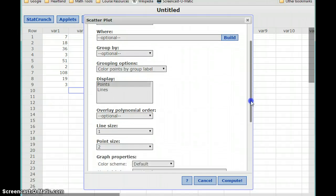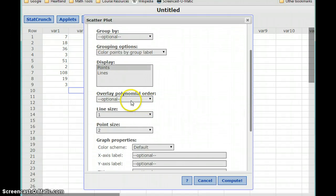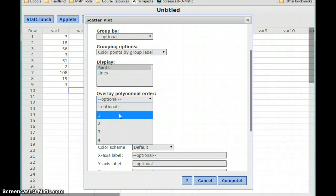And then what we want to do is add one extra step here. We want to overlay a polynomial of order 1. So 1 would indicate a first degree polynomial, so basically a straight line.